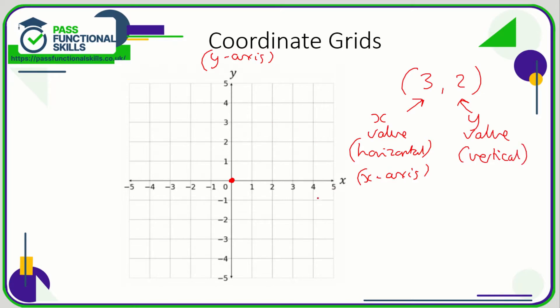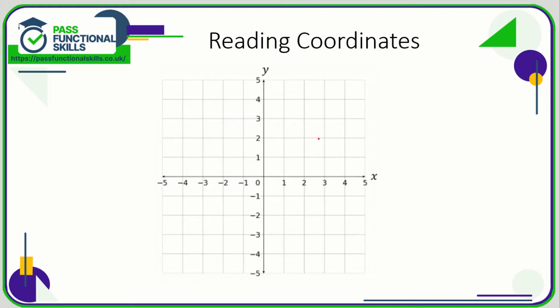So that's the basics of coordinate grids: two axes, x and y. And don't forget, the origin is where the two axes meet. So let's read some coordinates. I'm just going to plot a point here. Now what is the set of coordinates for this point?